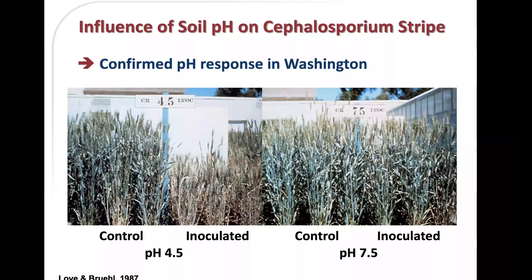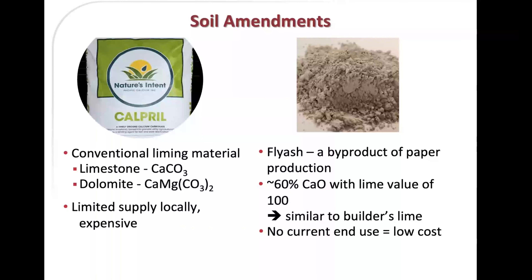That result really stimulated our work on soil acidity and cephalosporium stripe. We began working on this about 1985, and in 1992, we published a paper demonstrating that liming was effective in controlling cephalosporium stripe. Fast forward 40 years — things haven't changed very much in terms of how much liming is going on in the Pacific Northwest, especially the inland Northwest. So several years ago we decided to look at some alternative soil amendments that might have an effect on soil acidity, in particular fly ash.